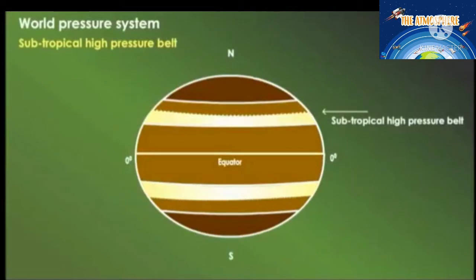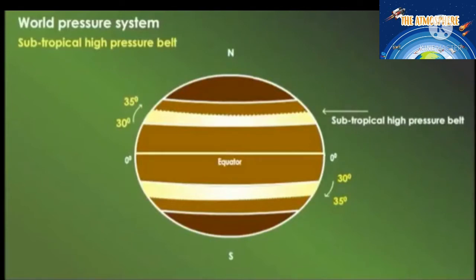Subtropical high pressure belt: this belt extends between 30 and 35 degrees latitudes in both hemispheres. The winds here are comparatively dry and calm. This is a zone of descending winds and wind divergence. This belt is often referred to as horse latitudes.